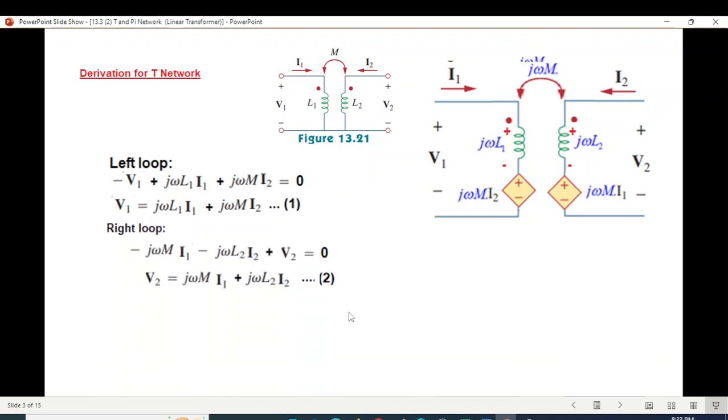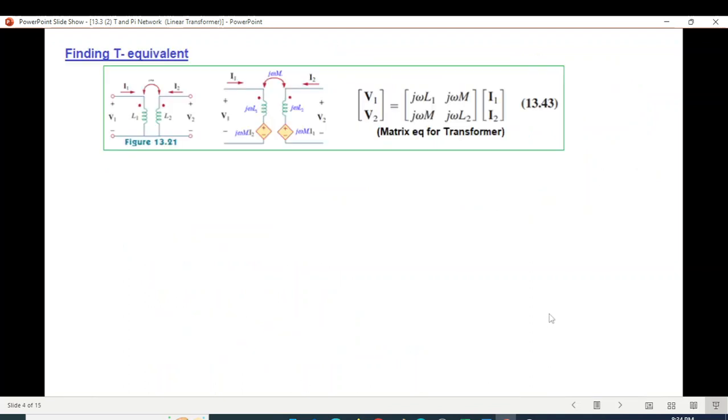Similarly, the right hand side we start from one corner: j omega L2 I2 and V2. So rearranging this. Now from these two equations, equation one and equation two, we can write the matrix equation. So the input V1, V2, and these are the parameters that we copy here. So this is the matrix equation. Now we'll carry this and derive the formula for T. This was for the transformer. We got a matrix equation for the normal transformer.